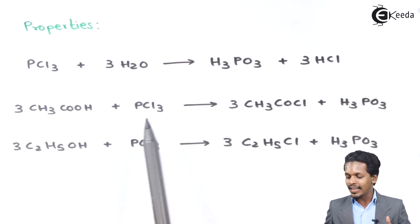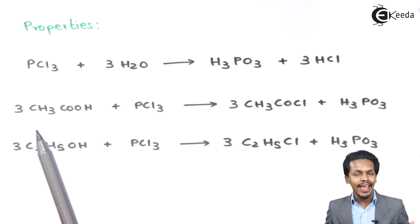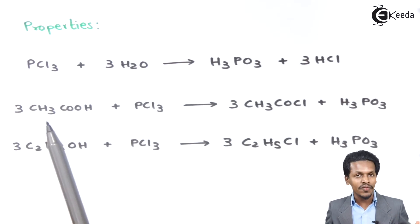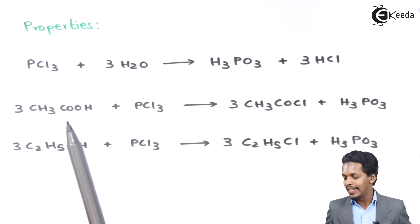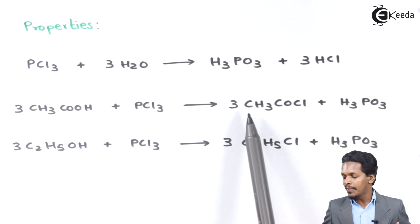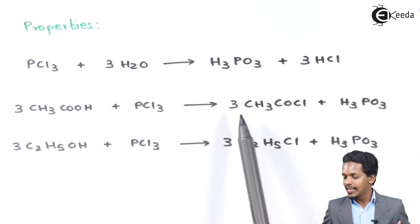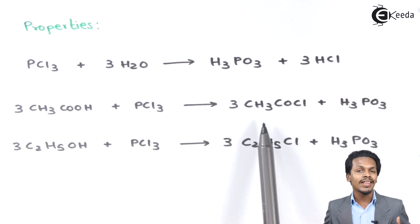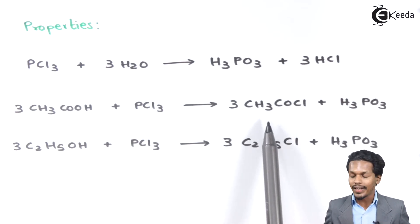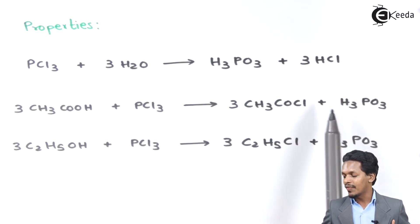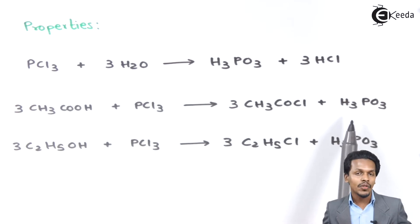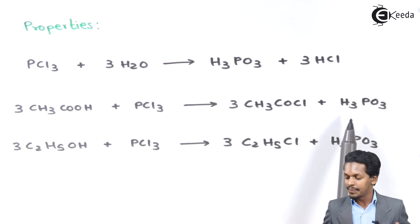PCl3 can be reacted with organic acids also. Whenever it is reacted with 3 moles of acetic acid, it will form a product that is CH3COCl, that is known as acid chloride, along with H3PO3, that is known as phosphorus acid.